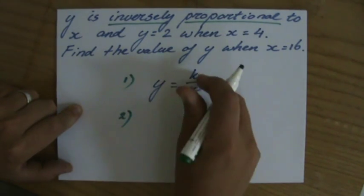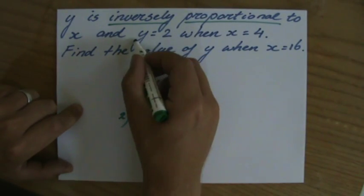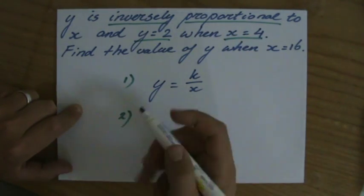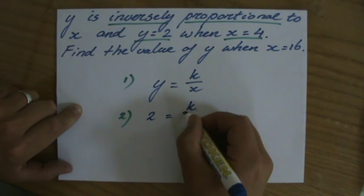Now my second step is to find out what is the value of that constant. Well, they tell me that y is 2 when x equals 4. Y is 2 when x equals 4.